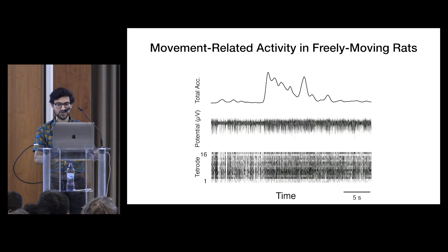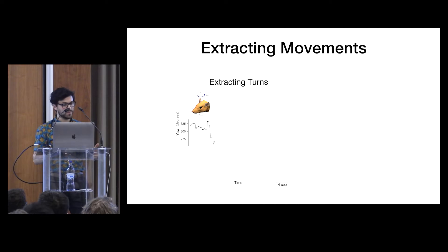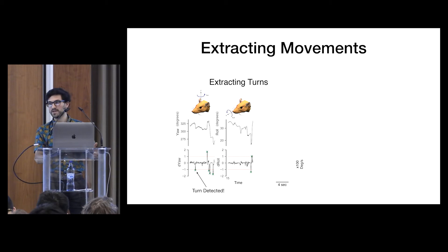But we wanted to see if V1 activity responded to specific movements. So we decided to look at orienting movements, or turns, which we extracted from head direction data by taking derivatives of each signal and finding peaks in the resulting velocity vectors. And here x's mark the spots where turns were detected. So like this we can get a hold of not just the left and right turns, but also clockwise and counterclockwise tilts of the head, and up and down nods. And then we can align this behavior to the neural activity like this.